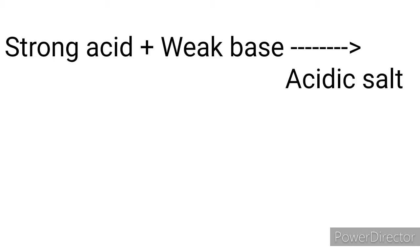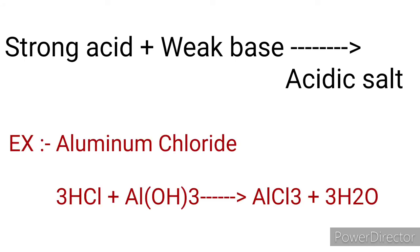The salt of a strong acid and a weak base is acidic and has a pH value of less than 7. For example, aluminium chloride is formed by hydrochloric acid and aluminium hydroxide. Hydrochloric acid is a strong acid and aluminium hydroxide is a weak base. As a result, aluminium chloride is acidic in nature.